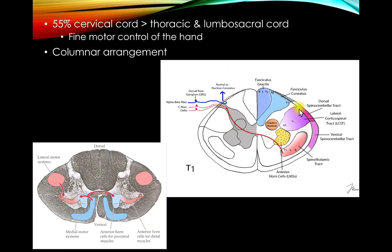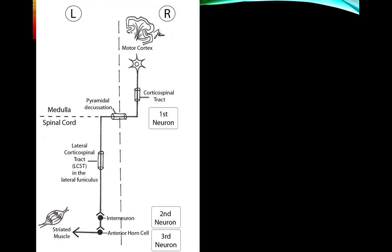The columnar arrangement of the corticospinal tract has sacral and lumbar fibers laterally, and thoracic and cervical fibers medially. Here is the big-picture pathway: neurons from the precentral gyrus travel down as the corticospinal tract, crossing at the pyramidal decussation at the junction of the medulla and spinal cord, then descending on the opposite side. Clinically, when neurologists refer to the corticospinal tract, they mean the lateral corticospinal tract.